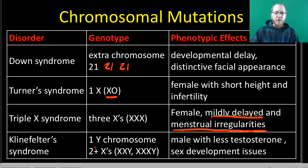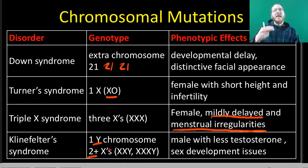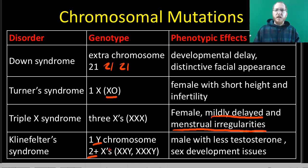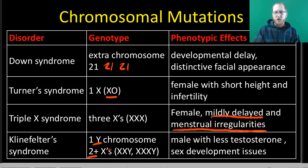Klinefelter syndrome is where you have a Y chromosome but more than one X chromosome. Because you have a Y, you will be male, but because of all those X chromosomes, you tend to produce less testosterone and less male hormone. So your male characteristics tend to be less pronounced and some feminine characteristics can be more pronounced. You are not a hermaphrodite — basically you're a slightly more effeminate male. This can lead to issues with fertility and development of secondary male characteristics.